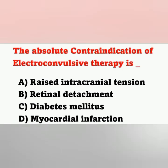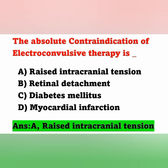The next question: The absolute contraindication of electroconvulsive therapy. Option A: raised intracranial tension. Option B: retinal detachment. Option C: diabetes mellitus. Option D: myocardial infarction. The question is, the contraindication of ECT — for which patient can we not give ECT? The correct answer is raised or increased intracranial pressure.